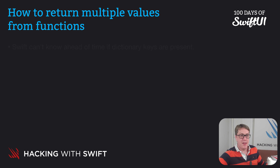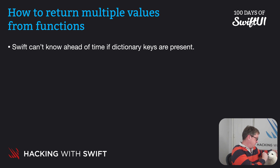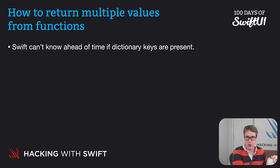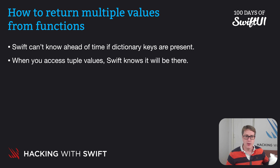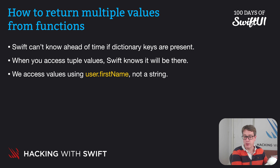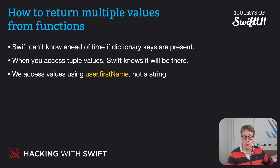Tuples are different from dictionaries in important ways. First, with dictionaries, Swift cannot know ahead of time if a dictionary's key is present, which is why we have all those default values. When you read tuple values, Swift knows a value will be available because a tuple says it's going to be available — that's the point of tuples. Also, we read values using user.firstName, not a string, so there's no chance of typos creeping in like fristname or firstnam by accident. These are values, not strings.